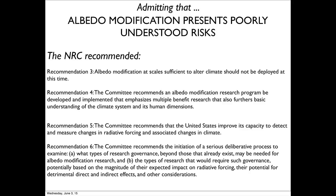They recommended that the research program emphasize multiple-benefit research that also furthers basic understanding of the climate system and its human dimensions. They also recommended that the U.S. improve its capacity to detect and measure changes in radiative forcing and associated changes in climate — a very good recommendation, because right now our ability to measure the radiation budget of the planet is insufficient to tell whether an experiment like this was really working. They also called for a serious deliberative process to examine what types of research governance may be needed for albedo modification research.